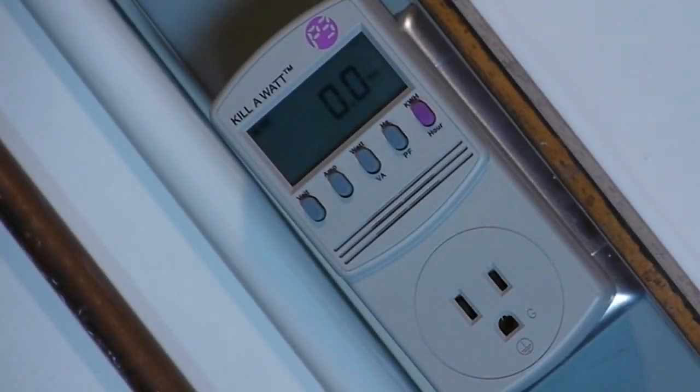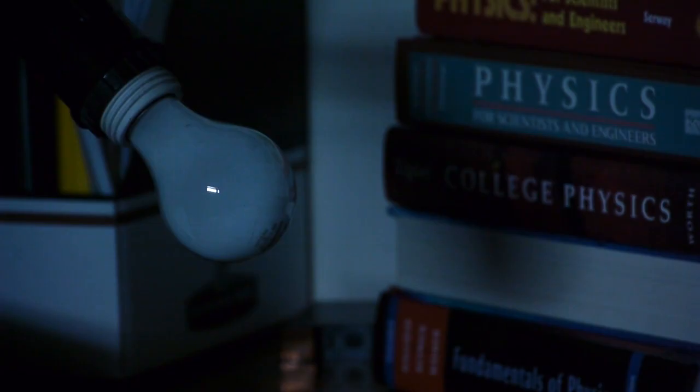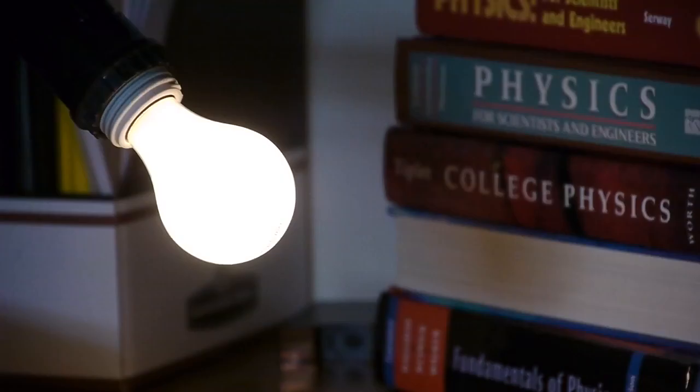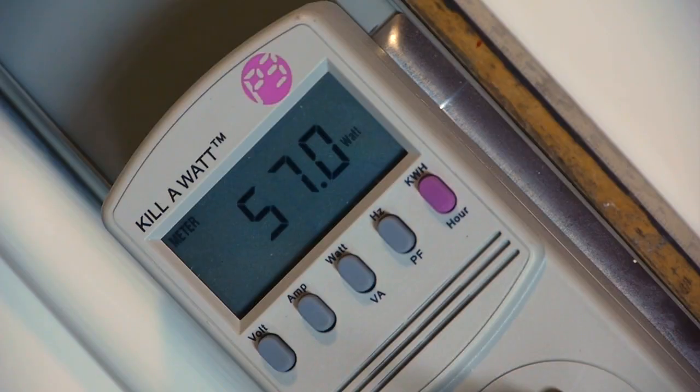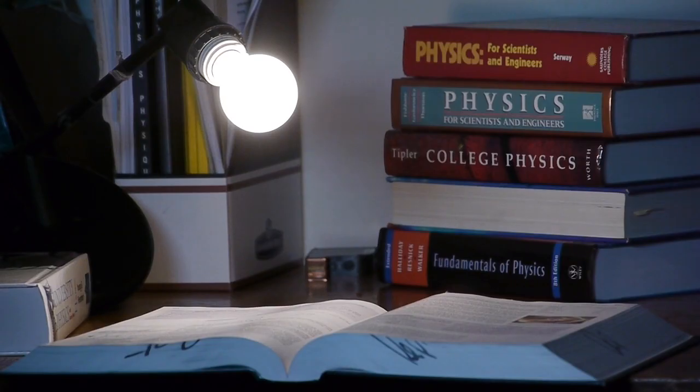This is a power meter, which measures the energy consumption of electrical devices. When the incandescent light is turned on, the power meter shows that it draws 57 watts. A watt is a measure of how much work is being done per second. The bulb converts this energy into light.